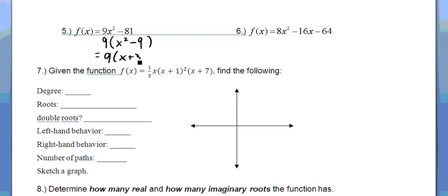x plus 3, x minus 3, because the square root of x squared is x, and the square root of 9 is 3. And since it's special, the difference of squares is plus and minus, so I know my zeros are x is equal to plus or minus 3. In other words, x is equal to negative 3 and x is equal to positive 3.